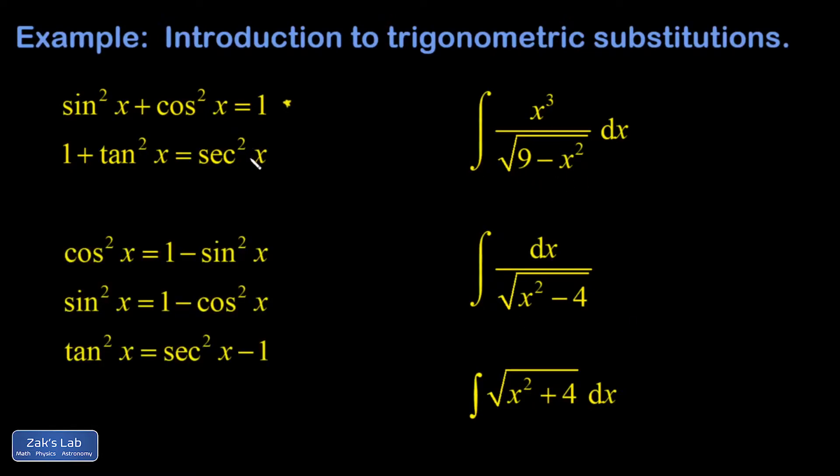So after messing around with these Pythagorean identities a little bit, I take the first one and I can solve for either the square of the cosine or the square of the sine. These are just sort of equally useful for the same types of integrals. On the right-hand side, I see a constant minus a variable thing squared, and that kind of matches the form of this first integral.